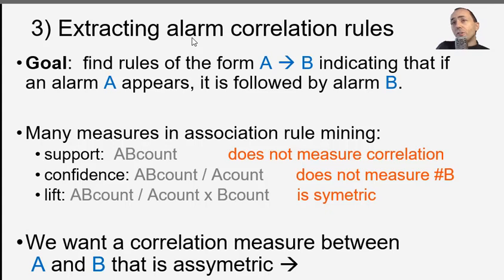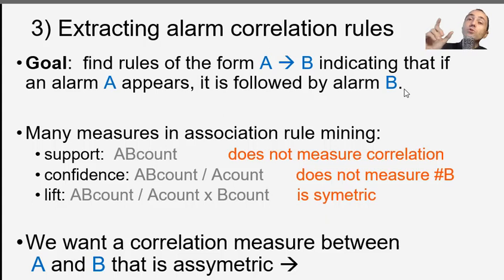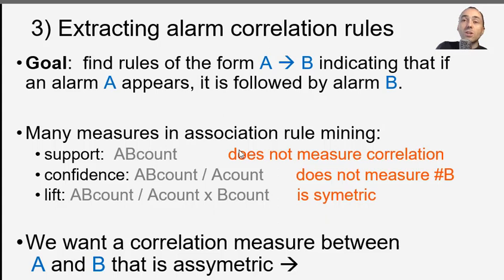From this dynamic attributed graph we want to find rules of the form 'A implies B' — so if alarm A appears, it will likely be followed by alarm B. We are never 100% sure about this, but we want to find strong rules with a strong correlation between alarms A and B. In association rule mining, they have different measures to find good rules, like support — how many times A and B appear together — and confidence.